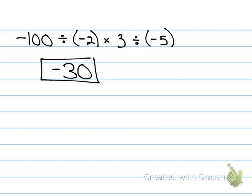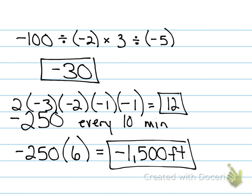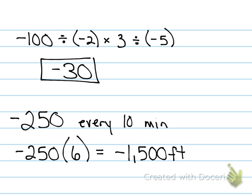You've got a couple of word problems on your homework and quiz on Monday. A hiker is descending 250 feet every 10 minutes. What will the change in elevation be in one hour? Descending 250 feet — that's negative — every 10 minutes. How many 10-minute increments are in an hour? Six. So we multiply negative 250 by 6, and we get negative 1,500 feet.